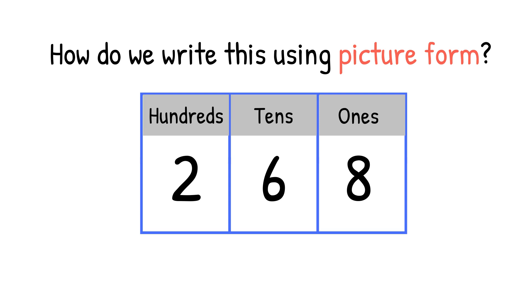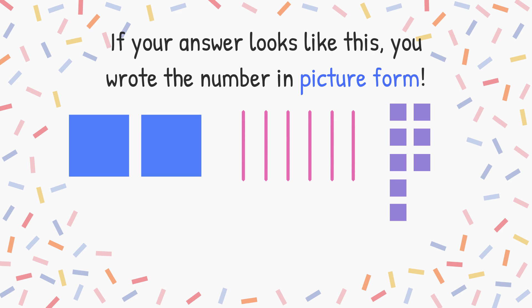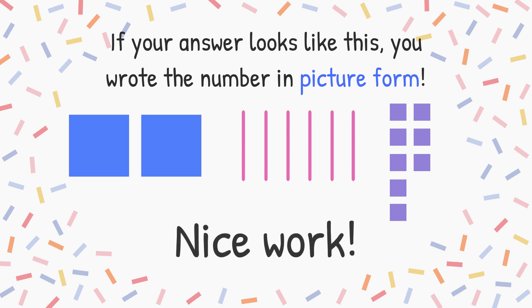How do we write this using picture form? If your answer looks like this, you wrote the number in picture form: 2 hundreds, 6 tens, and 8 ones. Nice work!